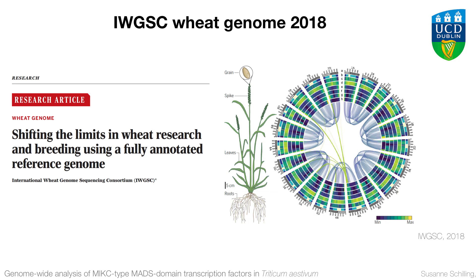Because we knew that MADS-box genes are such important regulators of plant development, we wanted to take a look at them in wheat. It came in handy that we had early access to the IWGSC genome sequence that Catherine was talking about. However, wheat is really not the easiest species to work with genetically, and Catherine also touched on that.